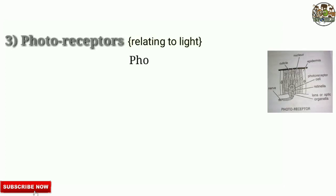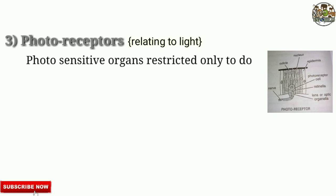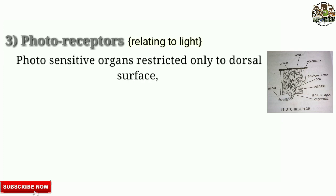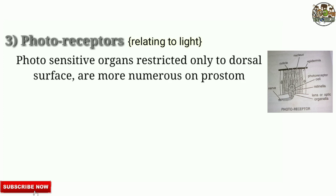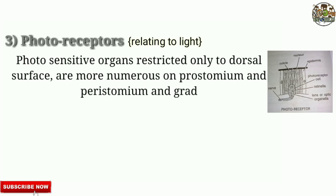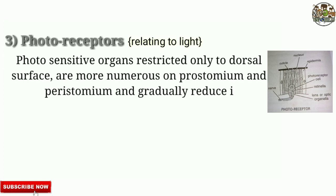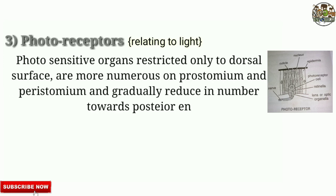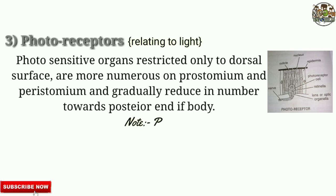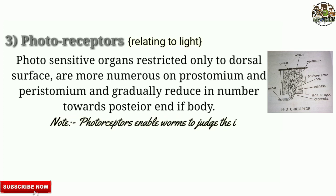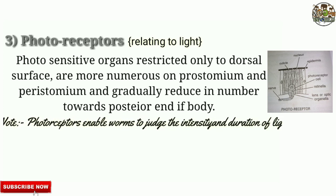Photoreceptors are photosensitive organs restricted only to the dorsal surface. They are more numerous on the prostomium and peristomium and gradually reduce in number towards the posterior end of the body. Note: Photoreceptors enable worms to judge the intensity and duration of light.